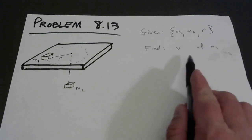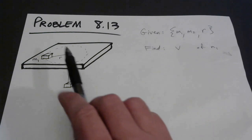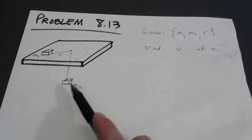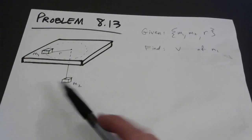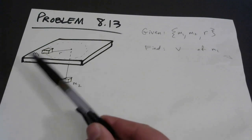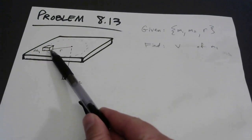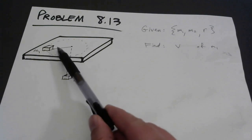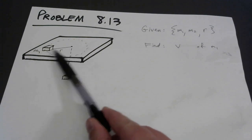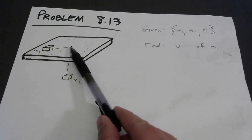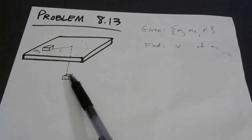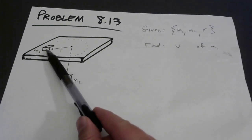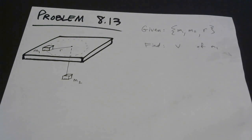We're interested in finding how fast mass one has to go to keep mass two in equilibrium. The faster it goes, the greater its acceleration, the greater the necessary centripetal force, which is the tension. So the heavier M2 is, the more tension you need, and the faster M1 would have to go to produce that tension.